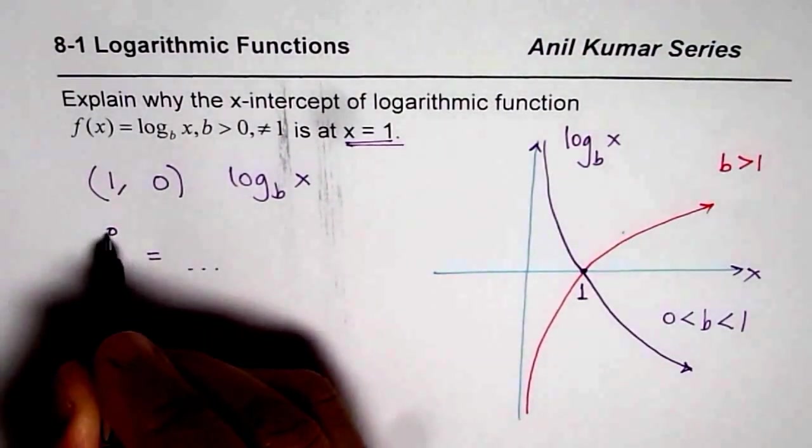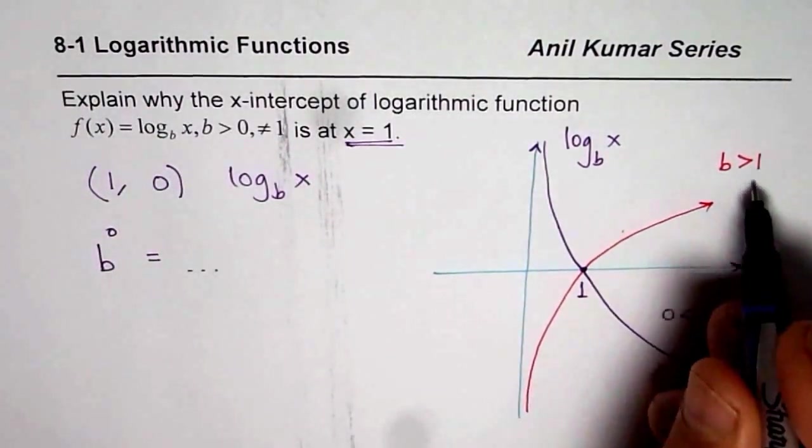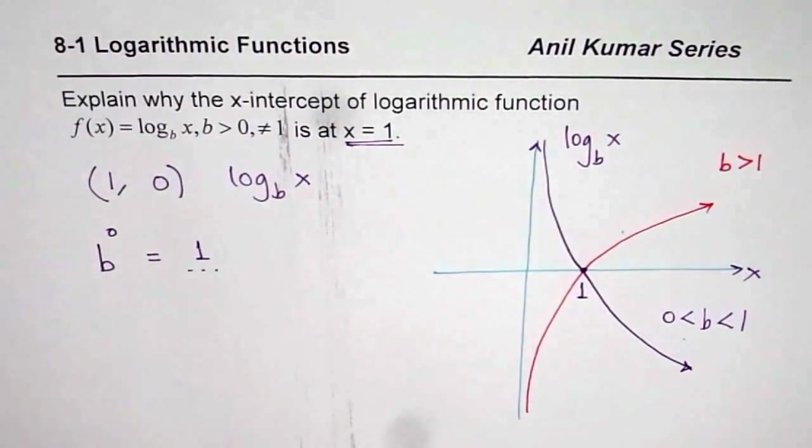b^0, where b is not equal to 0, is always 1. So, that is your answer.